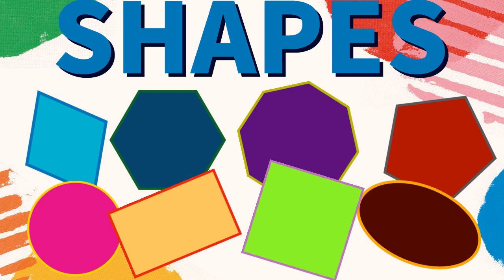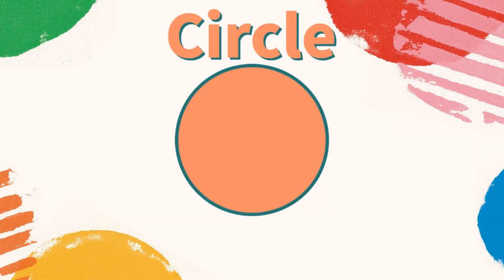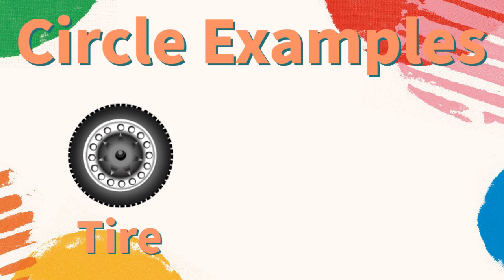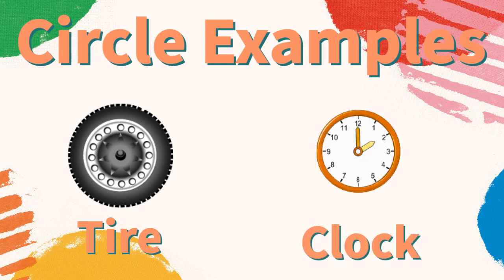Today let's learn about different shapes. Circle: a circle has zero sides and zero vertices. What are some examples of a circle? A tire is a circle, a clock can be a circle. What are some other examples of circles?